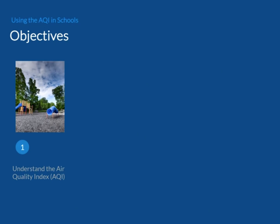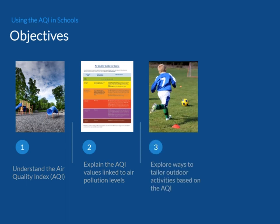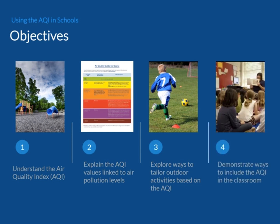The objective of this training is to help you understand EPA's Air Quality Index, or AQI; explain the AQI values and colors linked to air pollution levels; and demonstrate how these values may correspond to children's level of outdoor activities, as well as ways to include the AQI in classroom activities.